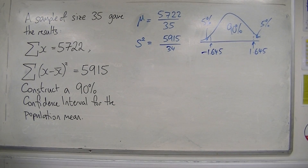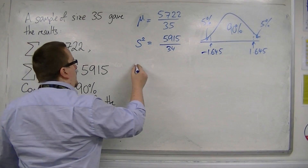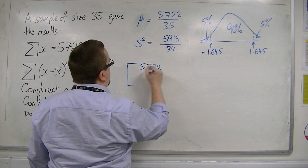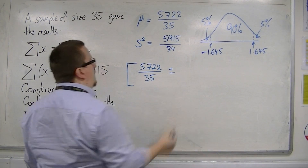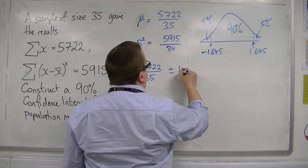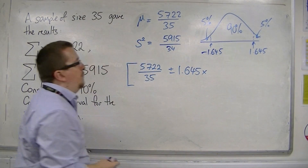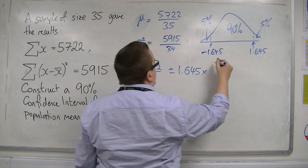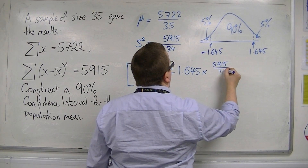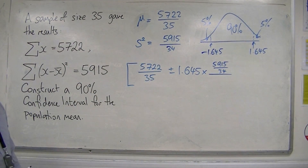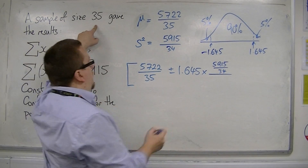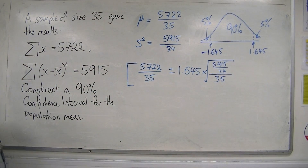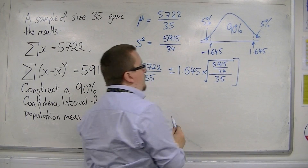So the confidence interval will be the mean, 5,722 over 35, plus or minus the z value 1.645, times by the standard error. The standard error will be the square root of 5,915 over 34, divided by n, which is 35.